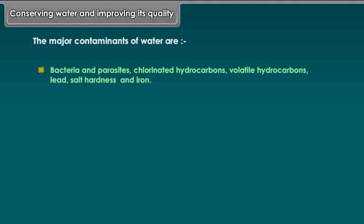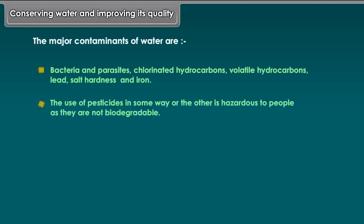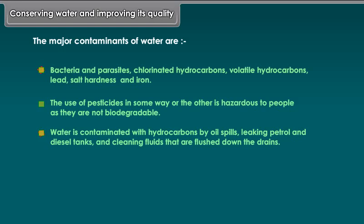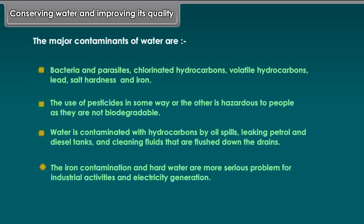The use of pesticides is hazardous to people as they are not biodegradable. Water is contaminated with hydrocarbons by oil spills, leaking petrol and diesel tanks, and cleaning fluids that are flushed down the drains. Iron contamination and hard water are more serious problems for industrial activities and electricity generation.